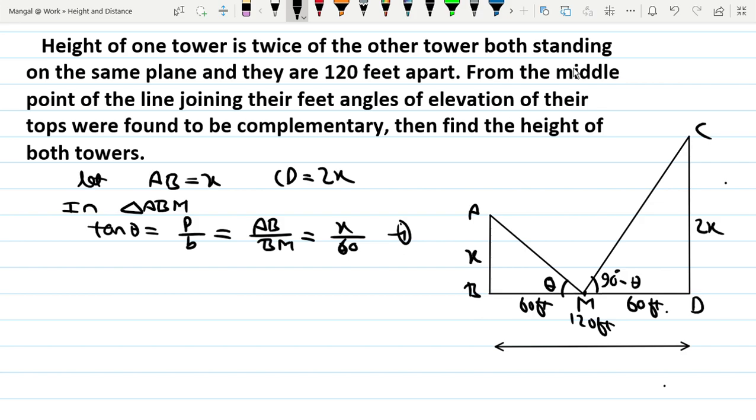In triangle CMD, the angle is 90 minus theta. So tan(90 - theta) equals CD over MD, which is 2x over 60, or x over 30.